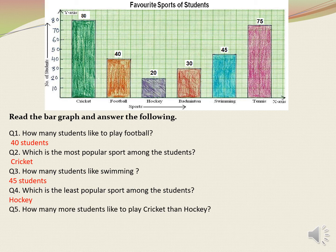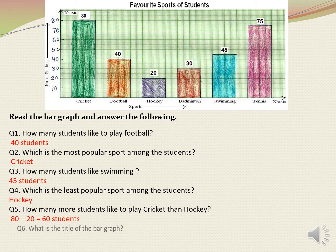How many more students like to play cricket than hockey? Here we are comparing, so we are going to do subtraction. Cricket is liked by 80 students and hockey by 20. So 80 minus 20 is equal to 60 students. We also know the title is mentioned on the top — therefore our answer will be favourite sports of students.